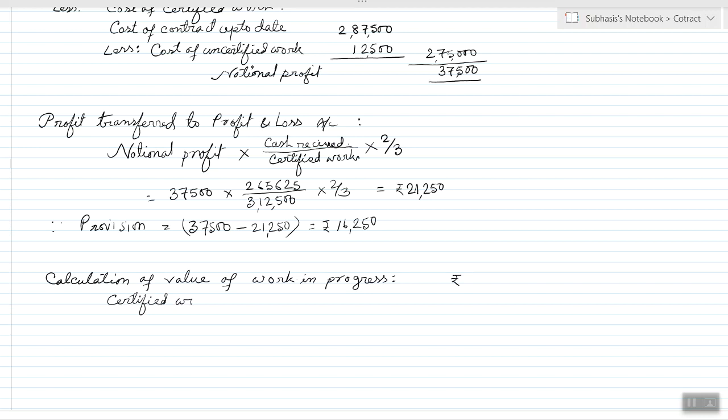Certified work 3,12,500, add cost of uncertified work 12,500, less provision 16,250.